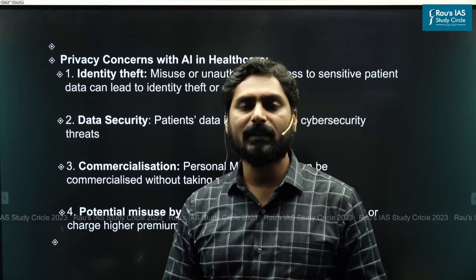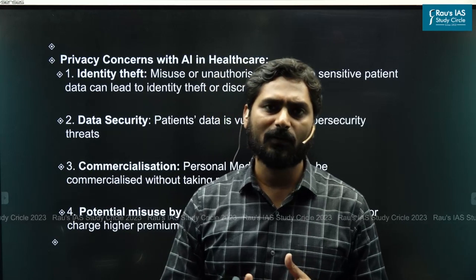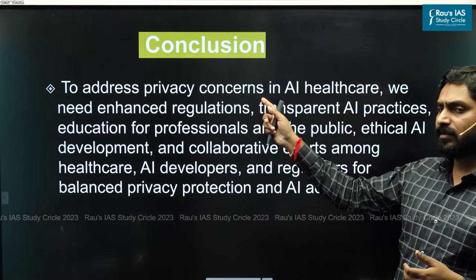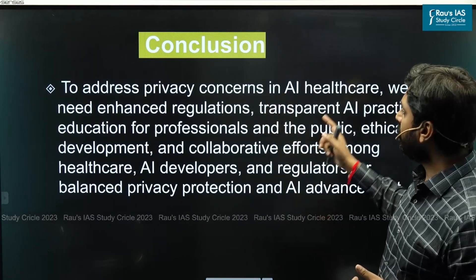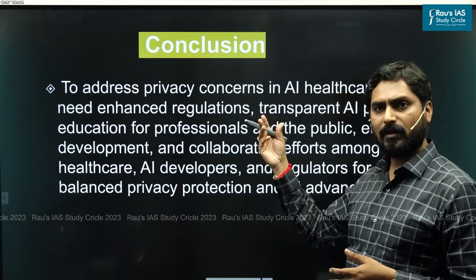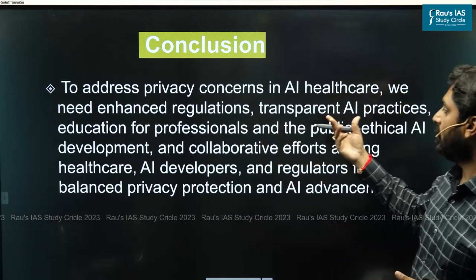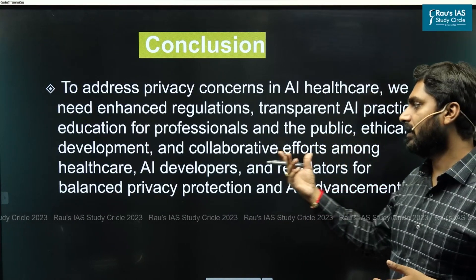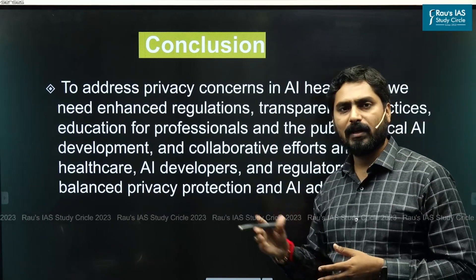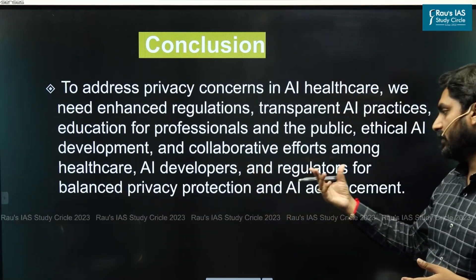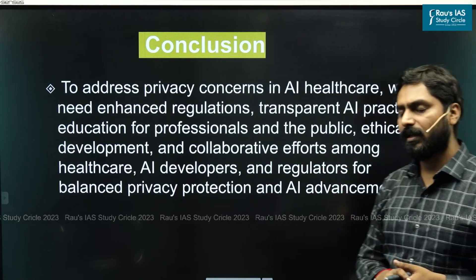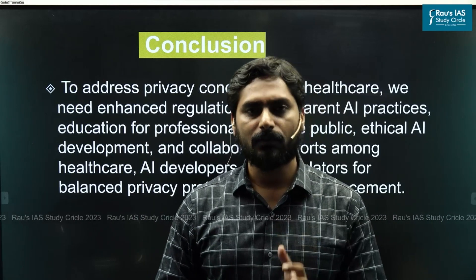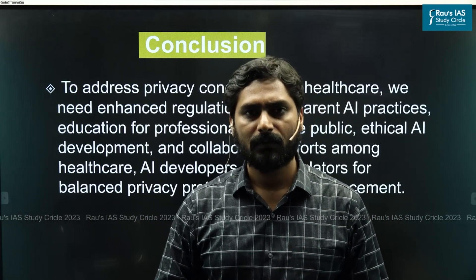In the conclusion, you can overturn these challenges and offer solutions. To address privacy concerns in AI healthcare, we need enhanced regulations, transparent AI practices, education for professionals and the public, ethical AI development, and collaborative efforts among healthcare providers, AI developers, and regulators to balance privacy protection with AI advancement. A solution-oriented conclusion makes for a good conclusion.